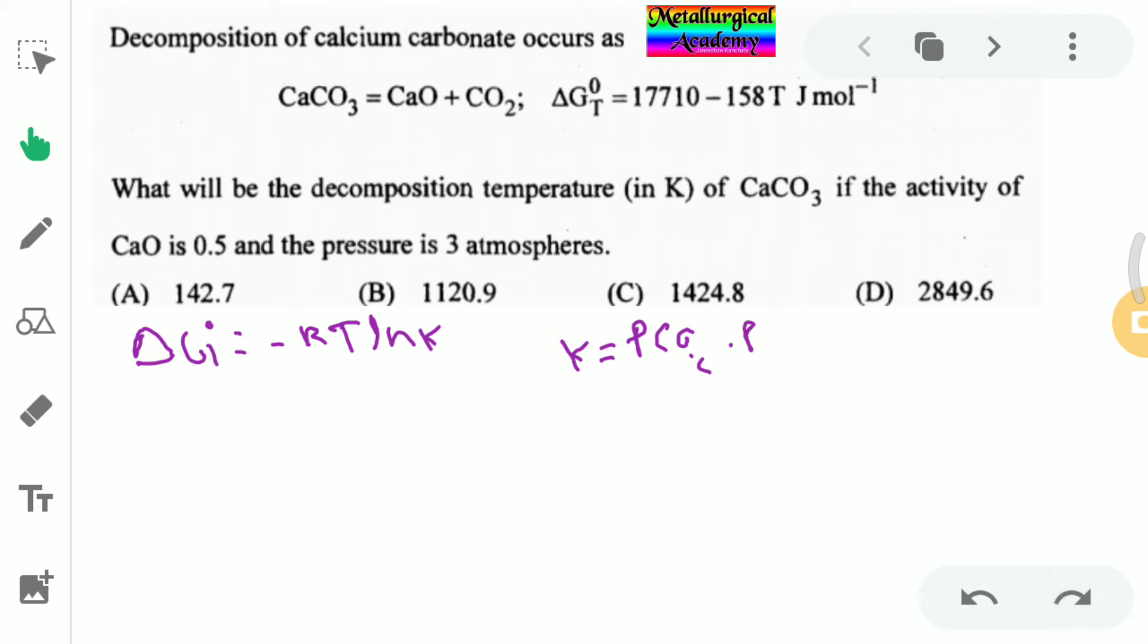So here partial pressure of CO2 and activity of CaO. So partial pressure of CO2 was given 3 atm into activity of CaO was given, it was 0.5, divided by activity of CaCO3 was 1. Why? Because it is a pure compound.